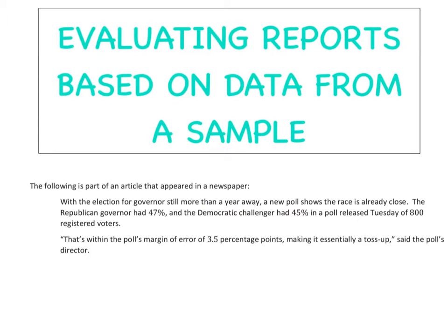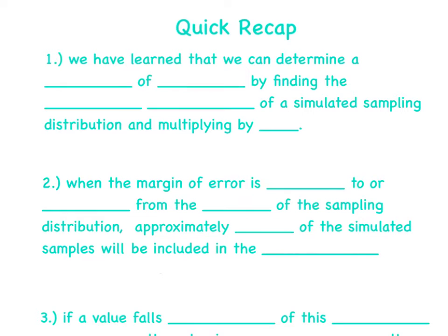A real quick recap and summary of where we've been in the last few days. We've learned that we can determine a margin of error by finding the standard deviation of a simulated sampling distribution and multiplying by what? Hopefully you just said 2 to yourself. We've got to multiply the standard deviation by 2.